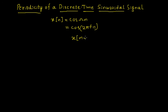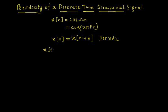We already know that a given signal is periodic if it satisfies the condition: X(n + N) = X(n), where N is the period. If this condition is satisfied, we can say that the given signal is periodic. Now I'll evaluate X(n + N).